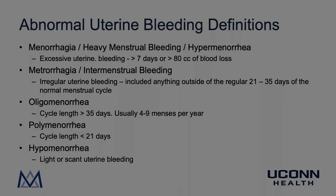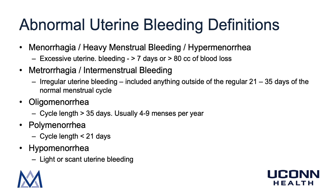Here you can see some older terms and definitions for abnormal uterine bleeding. The term menorrhagia is used to describe excessive uterine bleeding — menstrual bleeding that goes on for greater than seven days or greater than 80 cc's of blood loss. The terms heavy menstrual bleeding and hypermenorrhea were also used to describe excessive uterine bleeding. Metrorrhagia was used to describe irregular uterine bleeding, including anything outside of the regular 21 to 35 days of the normal menstrual cycle.